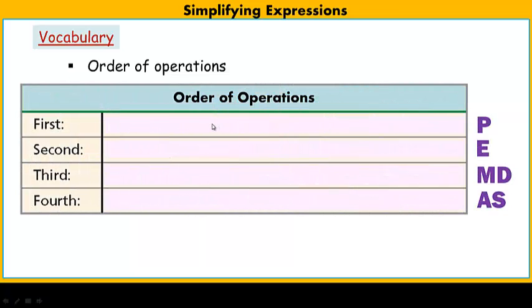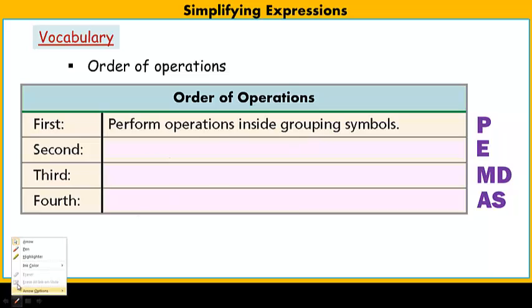Our textbook definition for order of operations: the first thing we do, that P parentheses, really is grouping symbols. And when I say grouping symbols, it's not just parentheses. Other types of grouping symbols are things like square root signs, this is called a radical sign.